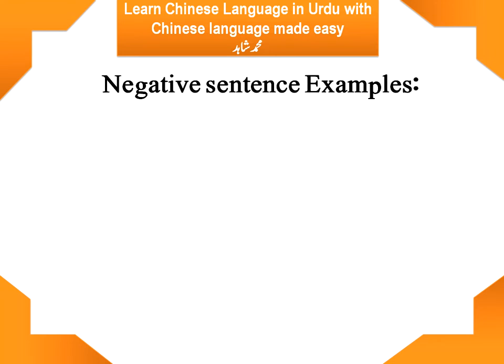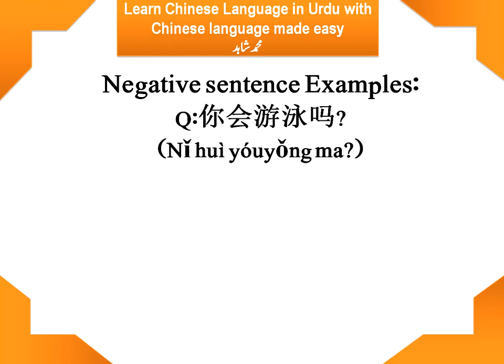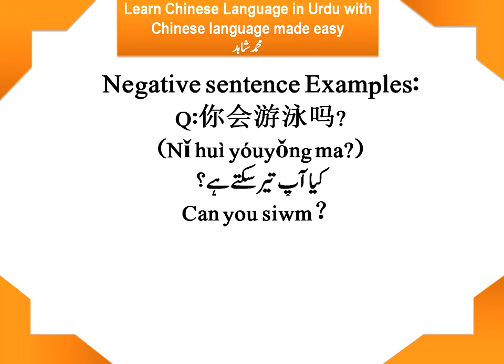Another sentence: 你会游泳吗? 你 means 'you,' 会 means 'can,' 游泳 means 'swim,' and 吗 is the question particle. Can you swim? Swimming is a skill, so we use 会 for it. So: 你会游泳吗? Can you swim?